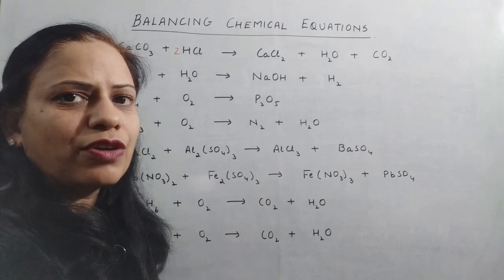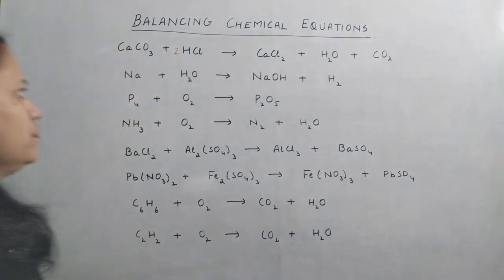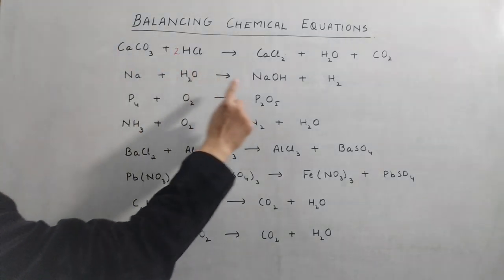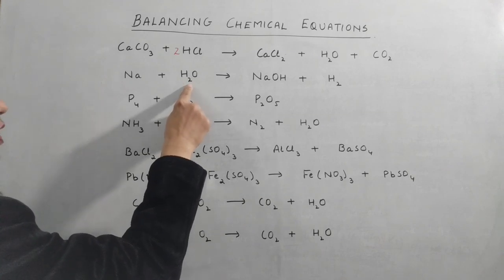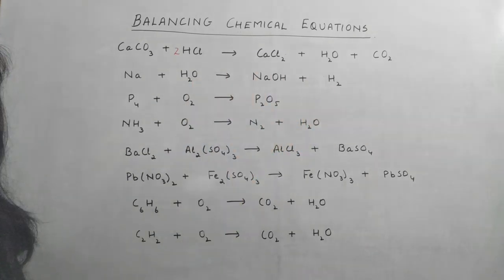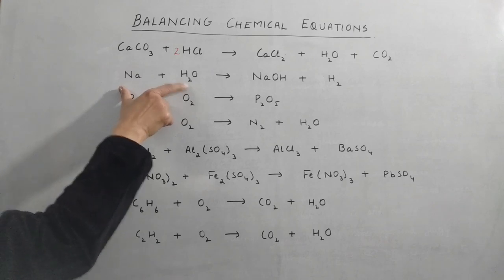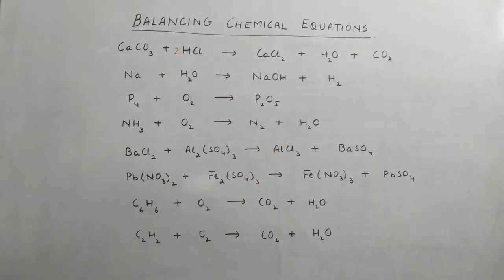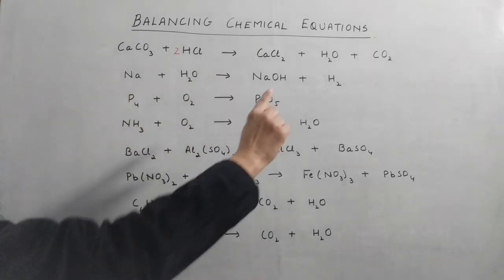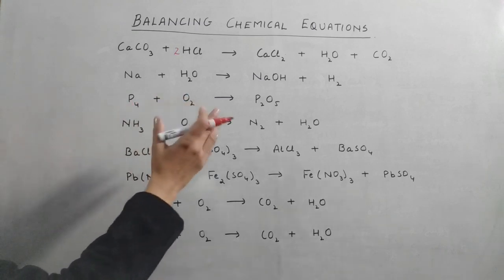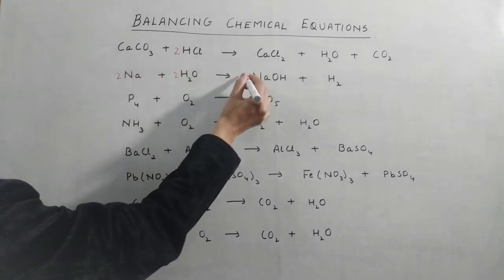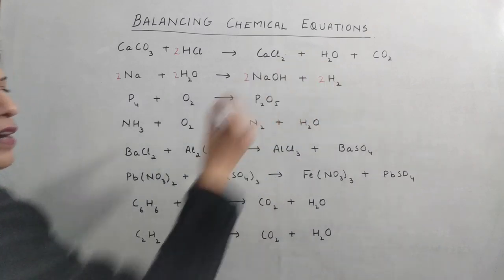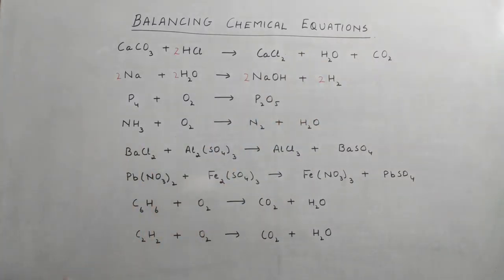Moving to the second equation: sodium is one atom on each side, already balanced. Hydrogen has two atoms on one side and three atoms on the other — an even number on one side and an odd number on the other. Whenever this situation arises, we multiply the entire equation by two so that the number of atoms becomes even on both sides. We write a coefficient of 2 in front of all components.